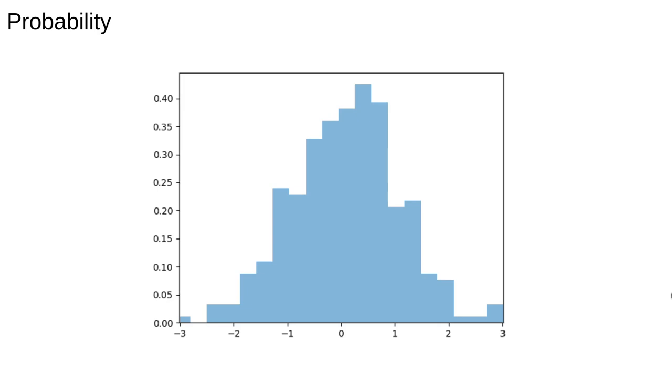This lecture will introduce some key concepts in probability and statistics that data scientists should know. Let's look at a histogram. We often find that real data is distributed around some mean with some tails.